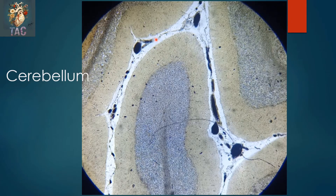Almost the same slide with a special stain: the outer molecular layer, then the Purkinje cell layer, the granular layer, and in the center you can see the white matter.